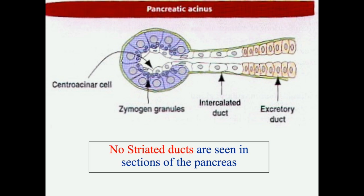This diagram demonstrates the differences in the duct system of the pancreas compared to the parotid. The first difference is the telescoped intercalated duct forming central acinar cells. The second difference is the absence of the intralobular striated duct. So in the pancreas we have four ducts: intercalated duct, interlobular duct, interlobar duct, and the main duct. You should remember the lining epithelium of each of these four ducts.